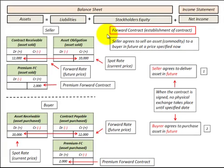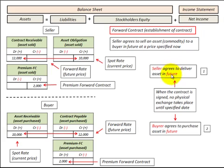Here we're going to look at forward contracts. A forward contract is a contract between a seller and a buyer, where the seller agrees to sell an asset like a commodity to a buyer in the future at a price specified now. The seller agrees to deliver this asset in the future, and the buyer agrees to purchase the asset in the future. When the contract is signed, no physical exchange takes place until the specified date.